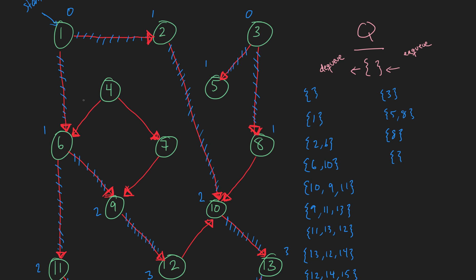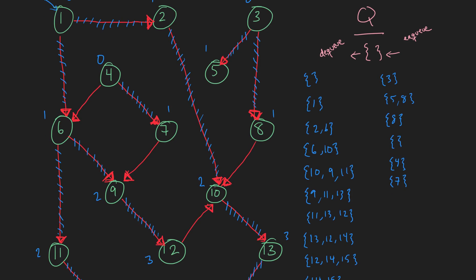Now we search from node 4, which has not yet been discovered, so we give it a distance of 0 and enqueue it. When we dequeue 4, its adjacency list has 6 and 7. Node 6 has already been discovered, so we only enqueue 7. When we dequeue 7, we check its adjacency list and find 9, which is already discovered — its color would be black. So we dequeue 7 and the queue is empty.